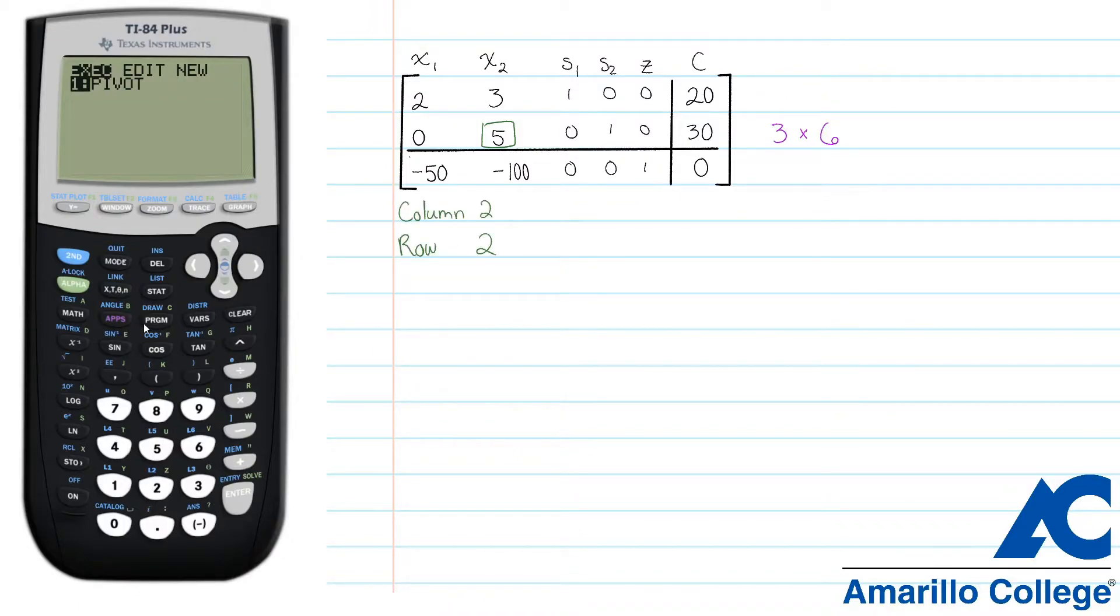Now we have to tell the calculator what our matrix is. Quit out of the program menu using second quit, and then hit second matrix to open the matrix menu. The first thing you'll see is a list of letters. These letters are the names of all the matrices your calculator can remember at once. For the pivot program, we will always use only the name A.